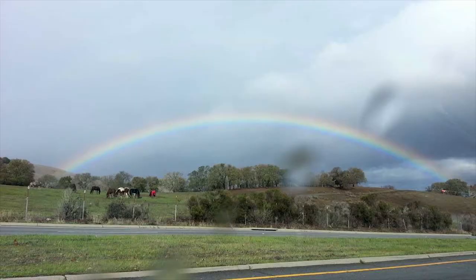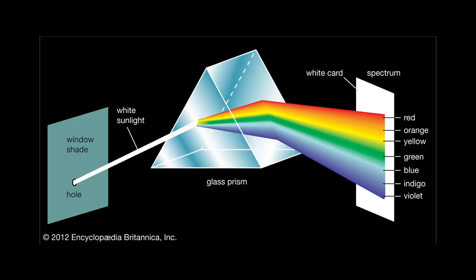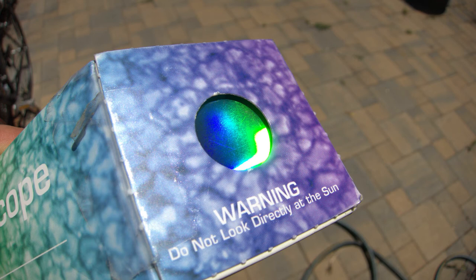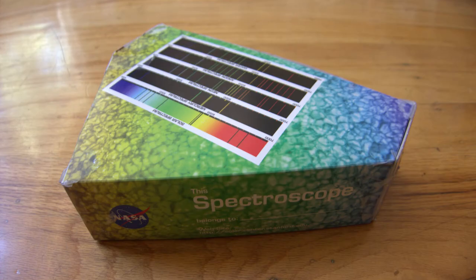These include drops of water in a cloud, a glass prism, and something called a diffraction grating. In this video, we'll be showing you how to make a very simple but powerful spectroscope using a diffraction grating and folded paper.